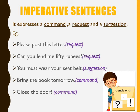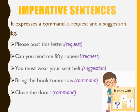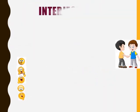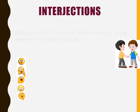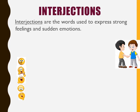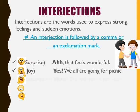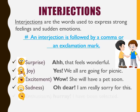So these were the four types of sentences. Let's move ahead. Now let's discuss interjections. Interjections are words used to express strong feelings and sudden emotions. Always remember, an interjection is followed by a comma or an exclamation mark. Emotions like surprise, joy, excitement, sadness, and enthusiasm can be expressed through various words.